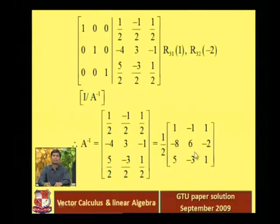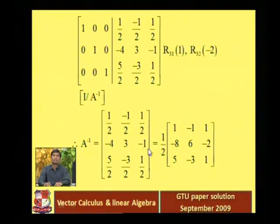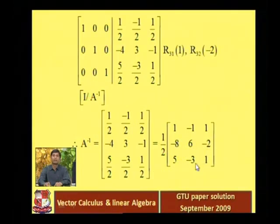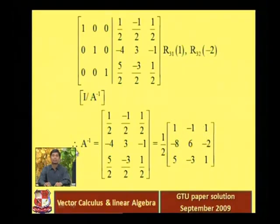Taking 1/2 as a common factor, the first and third rows become 1, minus 1, 1 and 5, minus 3, 1, while the second row multiplied by 2 gives minus 8, 6, minus 2. So this is our required inverse of the given matrix. That completes the solution — next question.